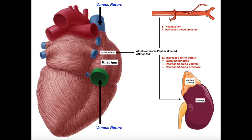This is the opposite system. This is a system that starts responding when we already have elevated blood pressure and/or blood volume. So we're going to be looking at the production of a peptide hormone called atrial natriuretic peptide, or ANP. Sometimes this will be referred to as atrial natriuretic factor, or ANF, but these are essentially the same thing.